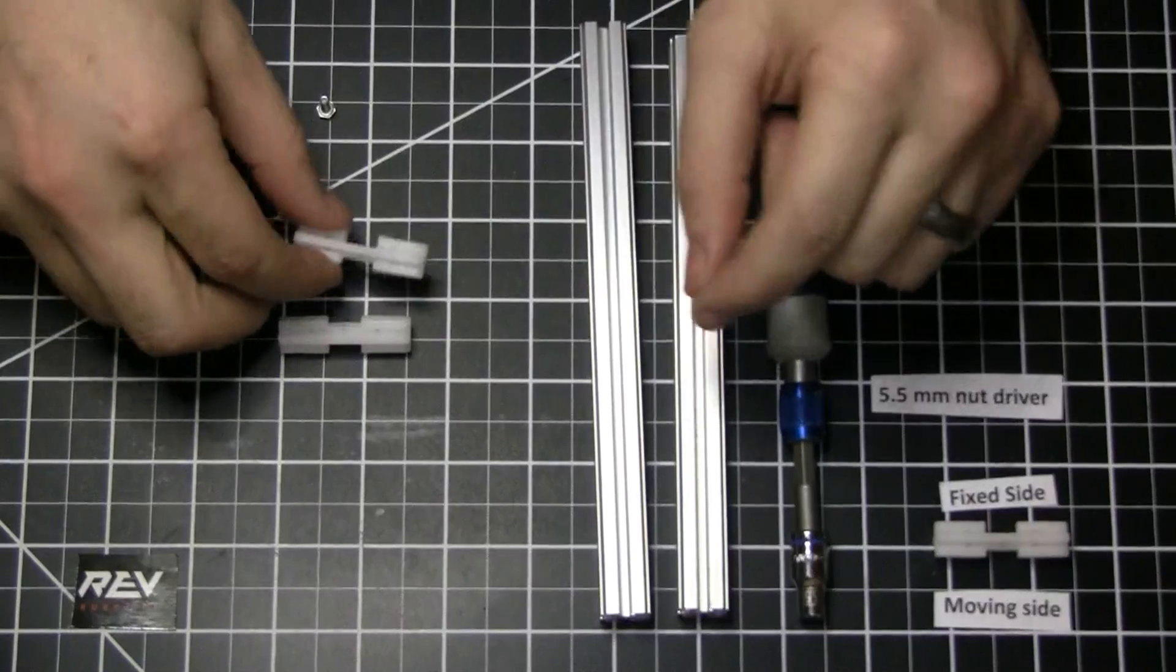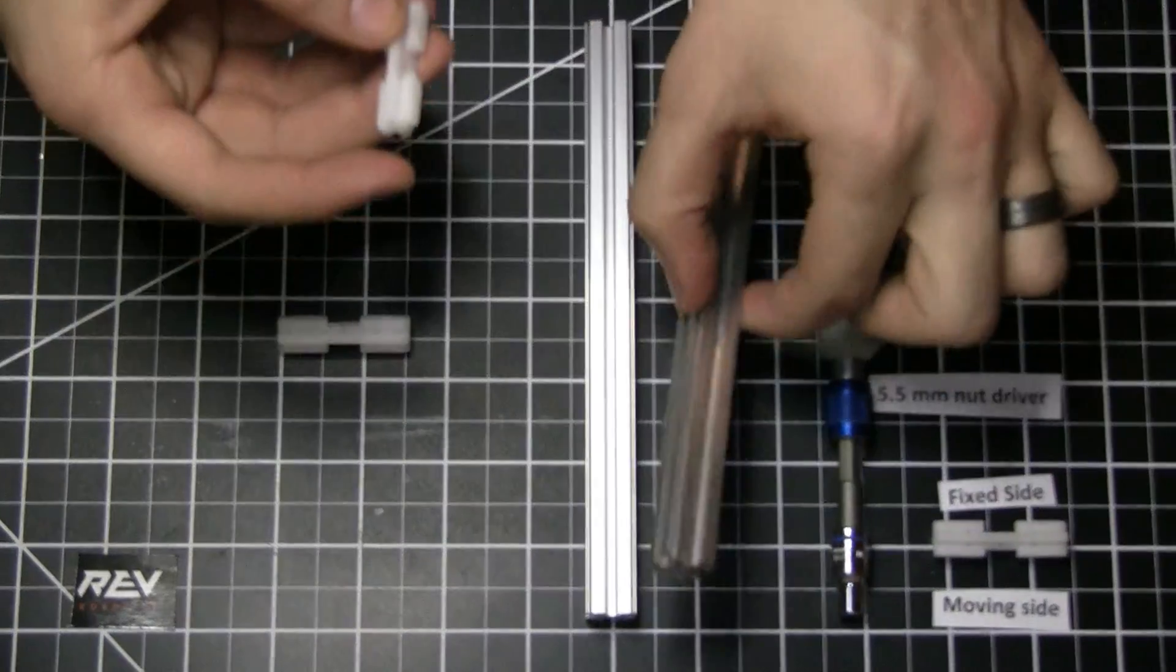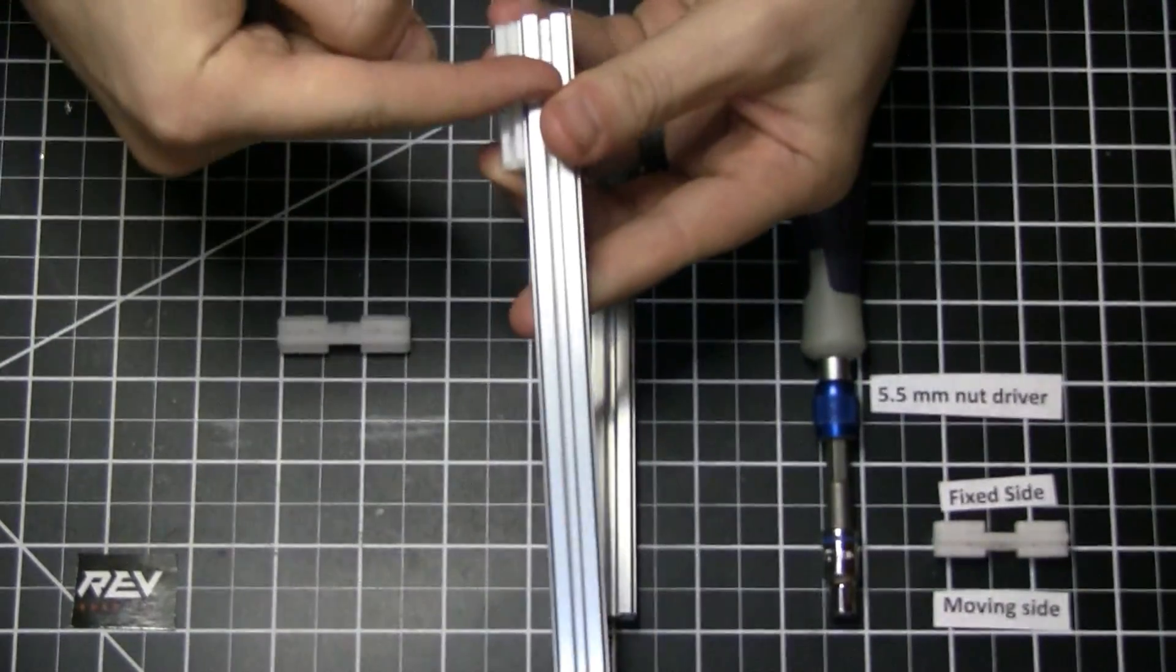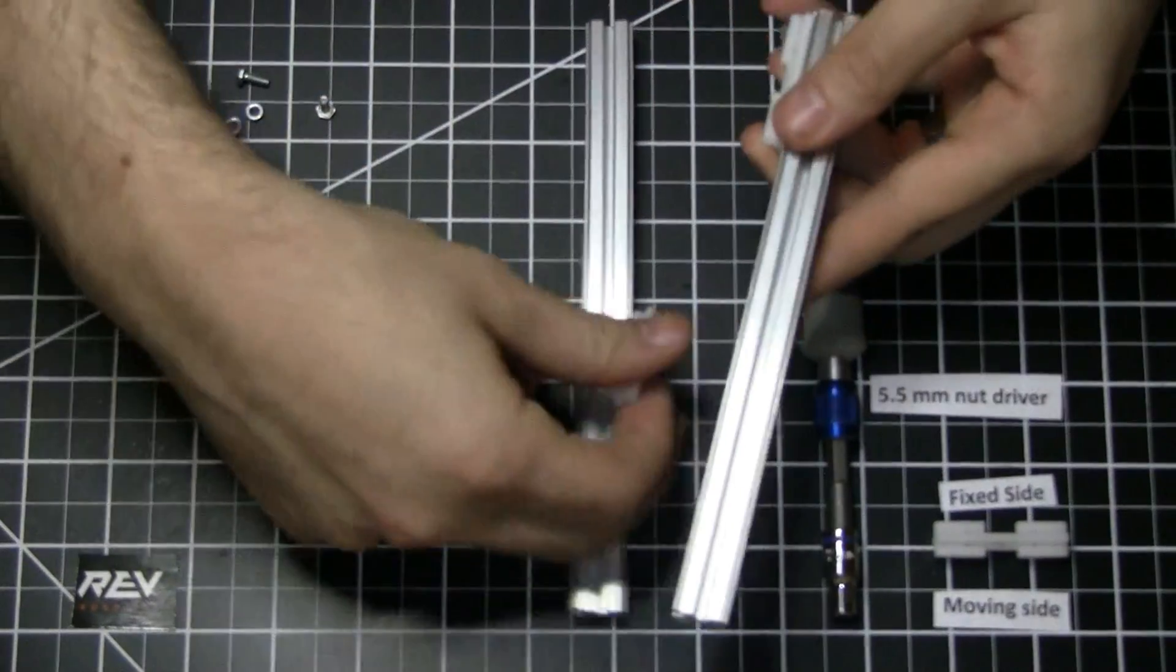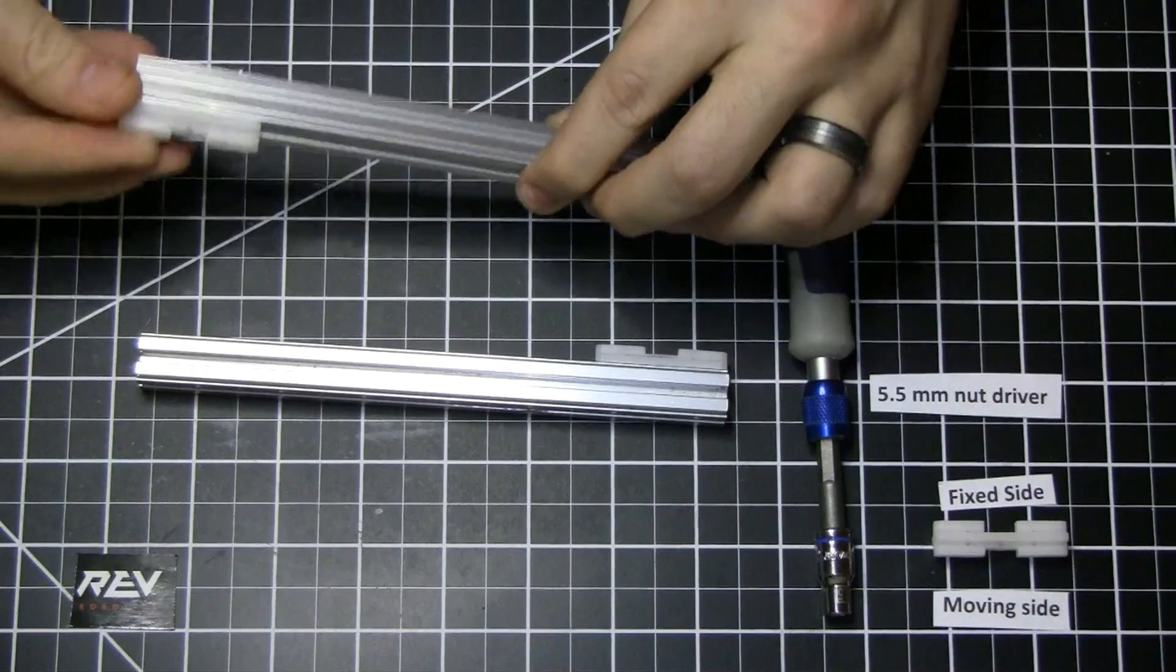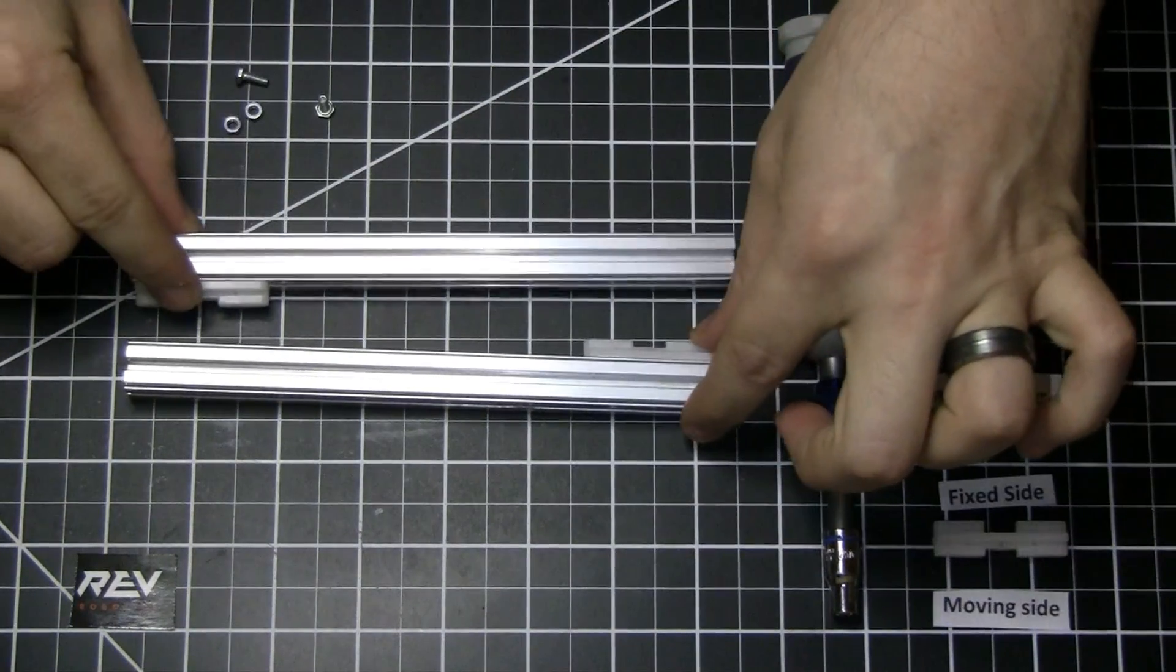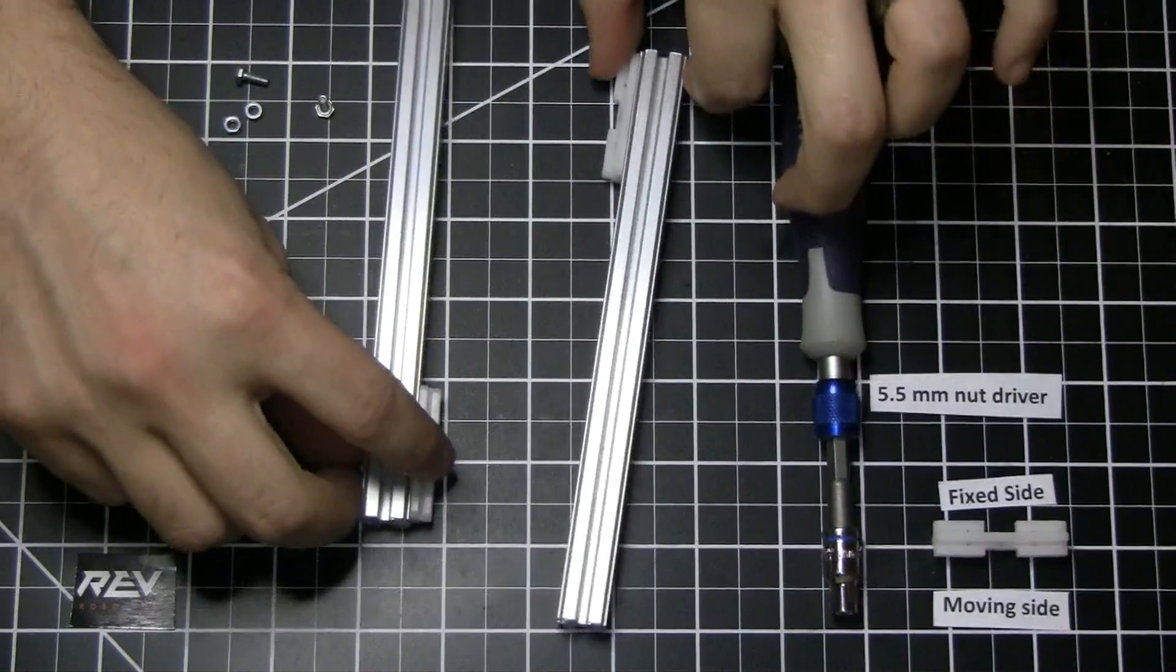The first thing that you're going to do, the way that this whole system works is your rails, one of these pieces of slider attaches permanently to one of your rails and then the other one attaches permanently to the other rail. So this stays fixed and this stays fixed, and when they slide they come together and become the end stop. So let's put one of these together.